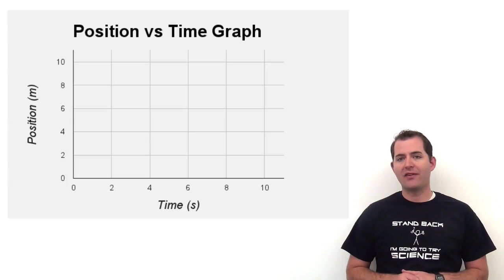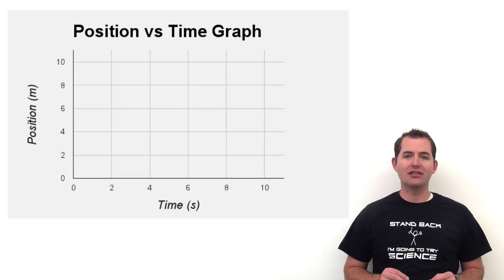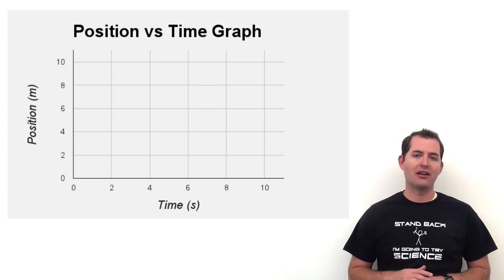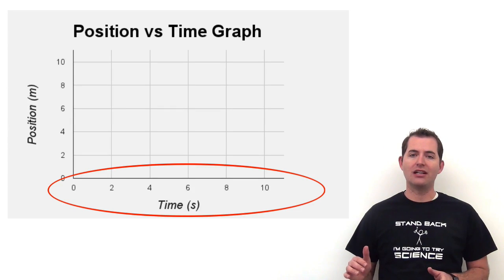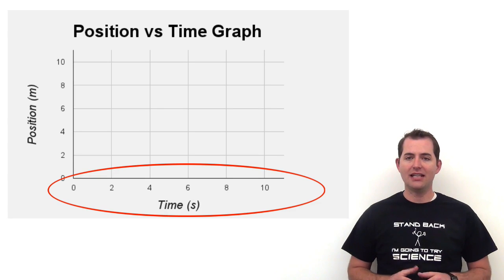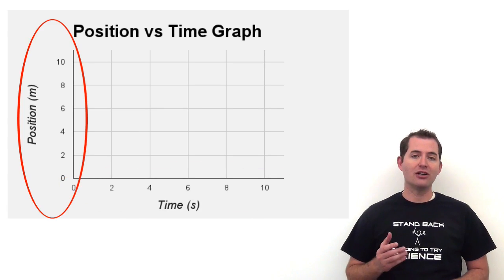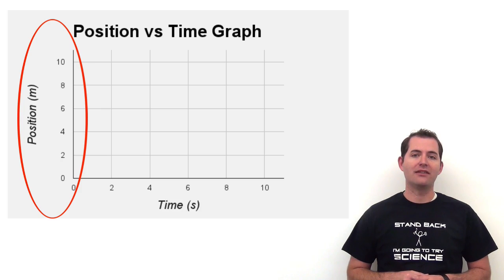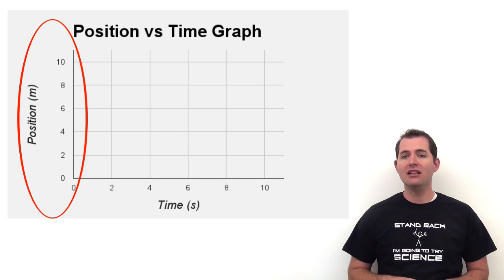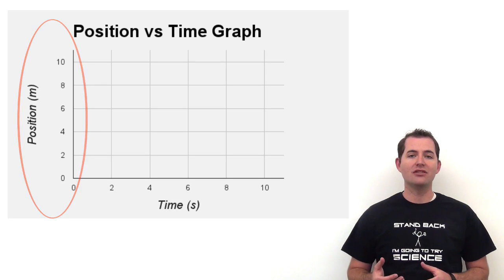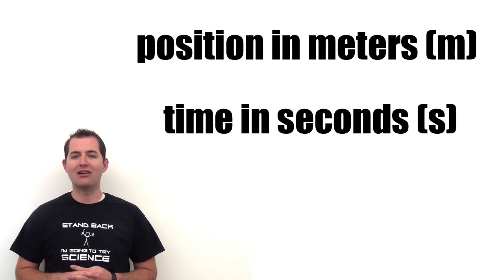Let's first look at the setup of a position versus time graph. Across the horizontal axis we have our independent variable, which in this case we'll use time in seconds. On the vertical axis we have the dependent variable, and in this case we'll call this position, and we're going to use the units of meters. We'll continue to use these units throughout all of this video.